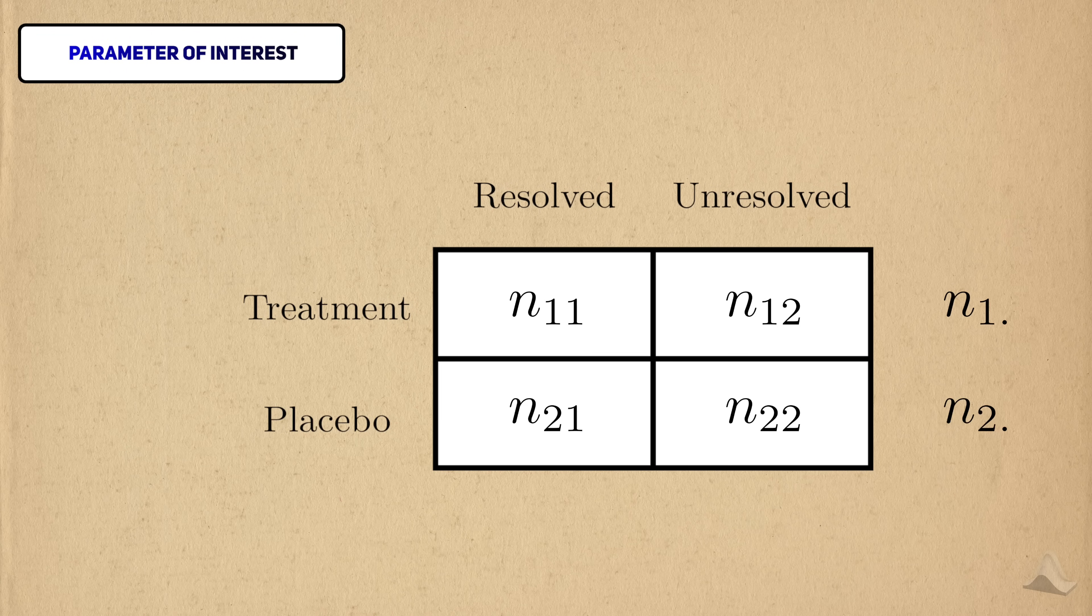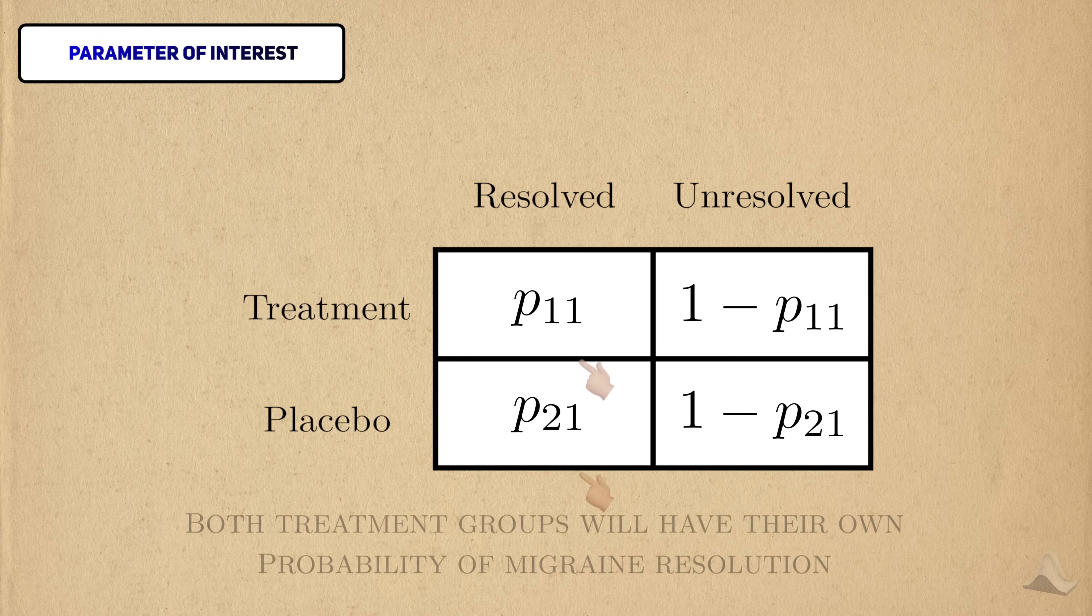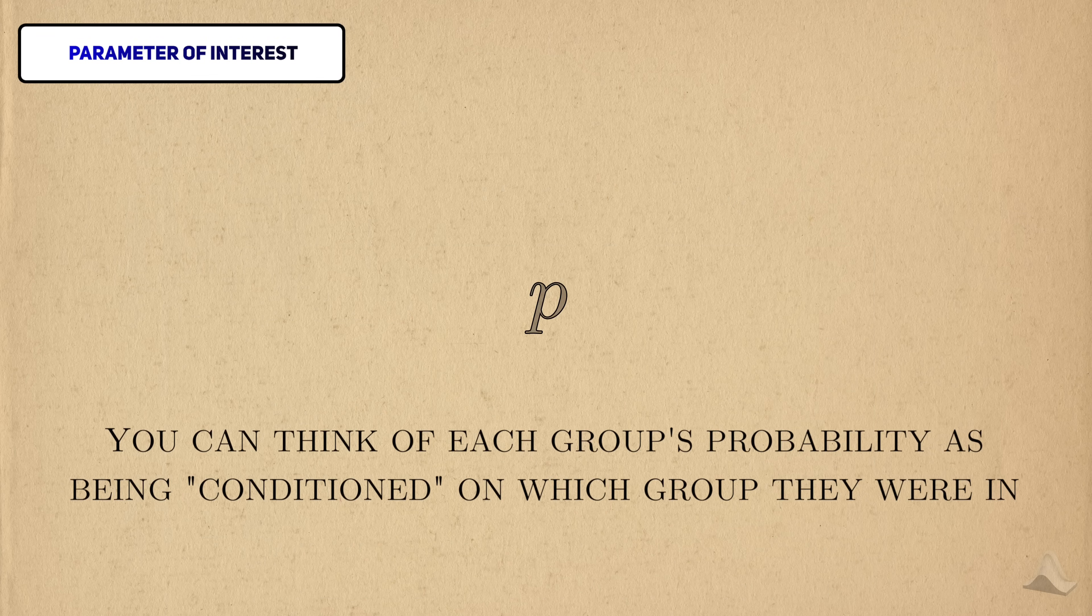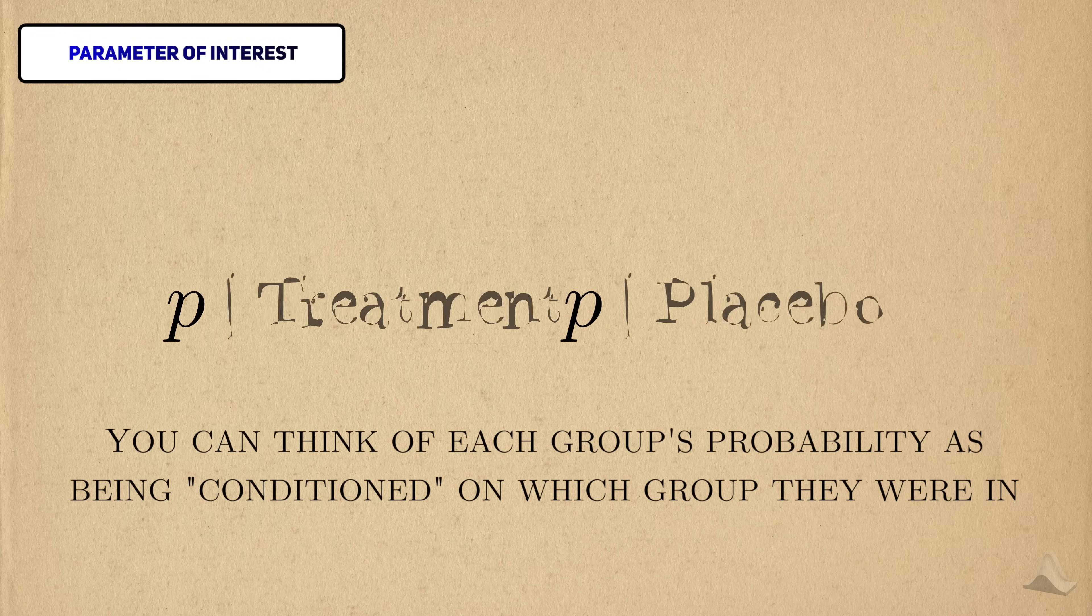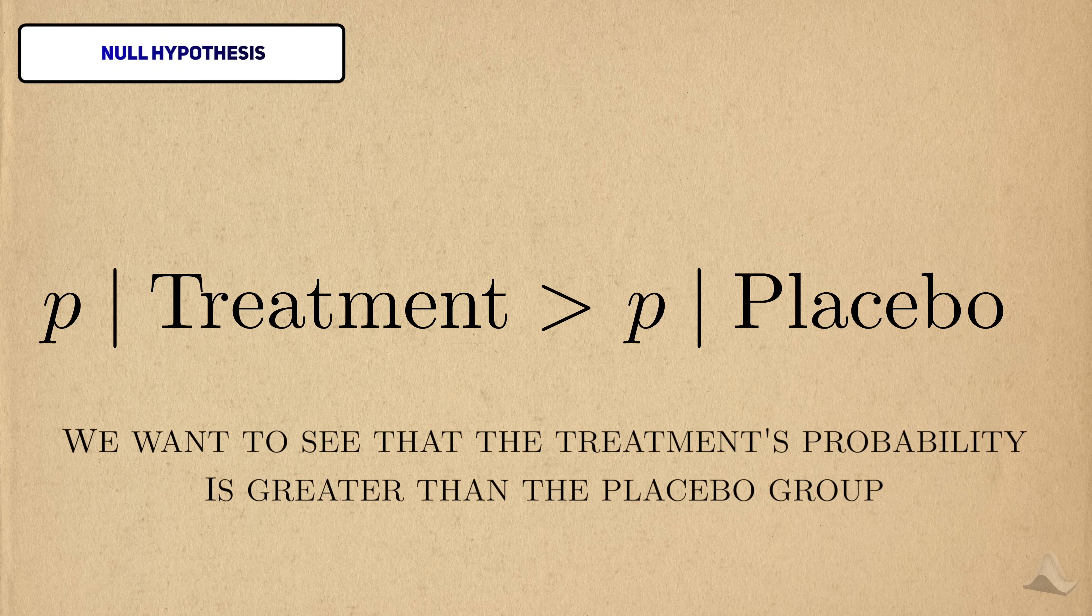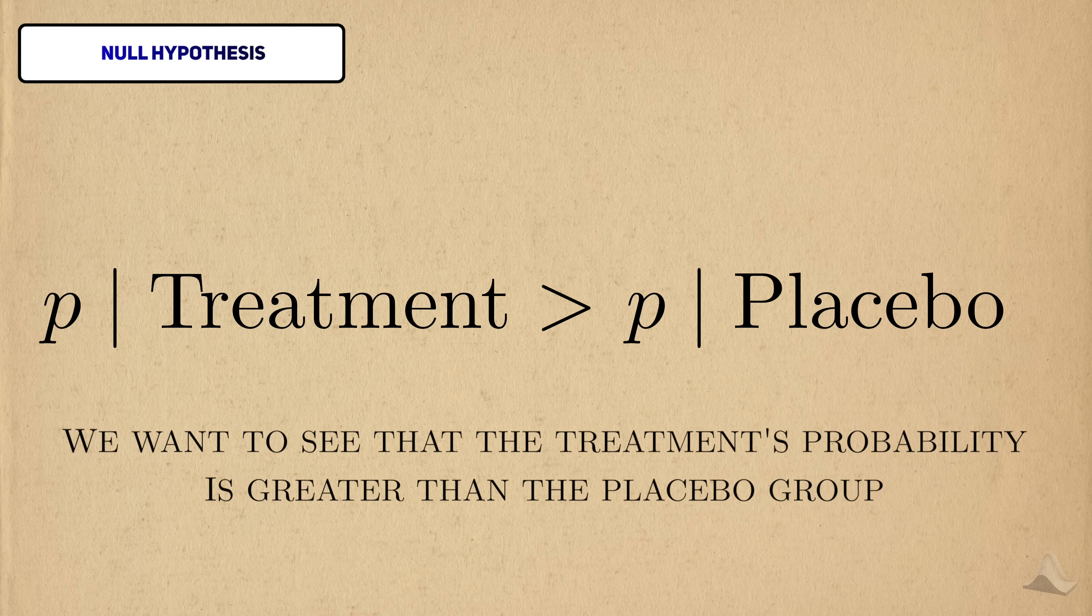To see the probabilities, we would need to divide the rows by the respective row margins. Each group will have their own probability of resolving the migraine, so you can also think of this probability as being conditioned on the treatment group. What we want to see is that people in the treatment group have a higher probability of their migraine stopping compared to the placebo group.